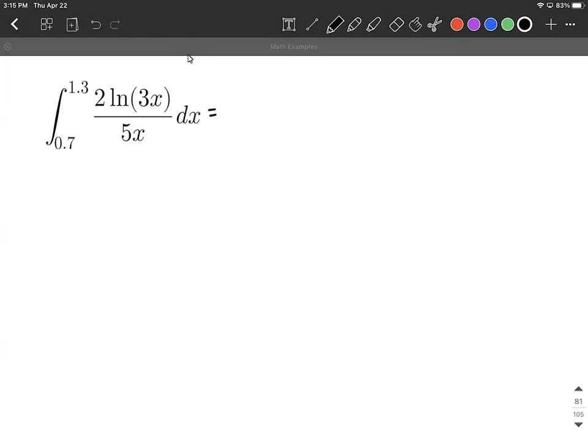So first of all, what I like to do is just rewrite this. So it gets a little bit more organized and I think it'll make more sense if we bring the two fifths out in front. Constants can come out front, keep the same bounds of integration for the time being, but then thinking about what we still have in there, natural log of three x divided by x. We can split this apart and think natural log of three x multiplied by one over x dx.